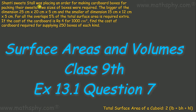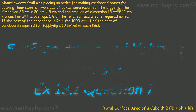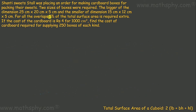Shanti's sweet stall was placing an order for making cardboard boxes for packing their sweets. Two sizes of boxes were required: the bigger of dimensions 25×20×5 and the smaller of dimensions 15×12×5. For all the overlaps, 5% of the total surface area is required extra. If the cost of the cardboard is Rs.4 for 1000 cm², find the cost of cardboard required for supplying 250 boxes of each kind.